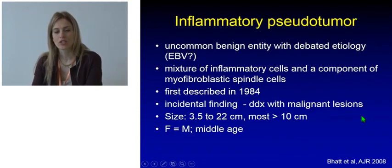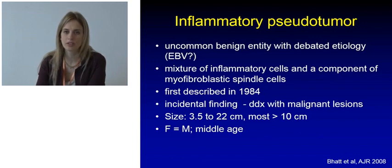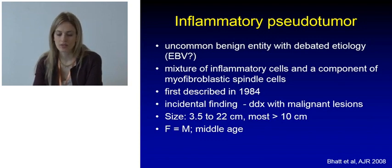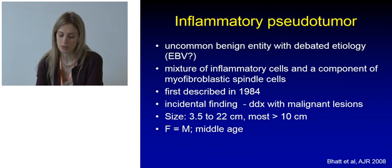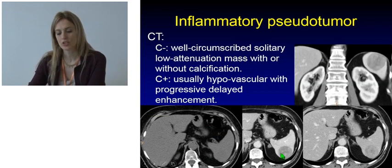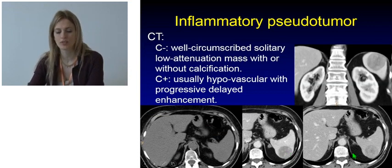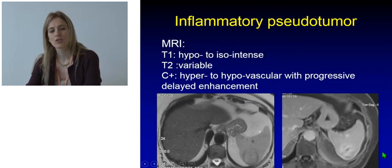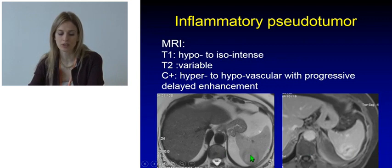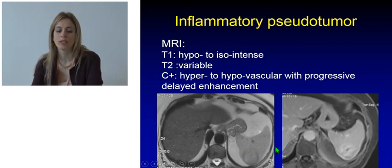Inflammatory pseudotumor is an uncommon benign entity with a debated etiology; some authors have correlated it with EBV infection and it is usually an incidental finding. These are large lesions, 3 to 20 cm, mostly described above 10 cm. At CT we can see a well-circumscribed solitary low-attenuation mass that may or may not show calcifications, and after contrast administration the lesion appears hypovascular with progressive delayed enhancement. At MRI the lesion is hypo- to iso-intense on T1, with variable T2 appearance, and can be hypovascular or even hypervascular after contrast.